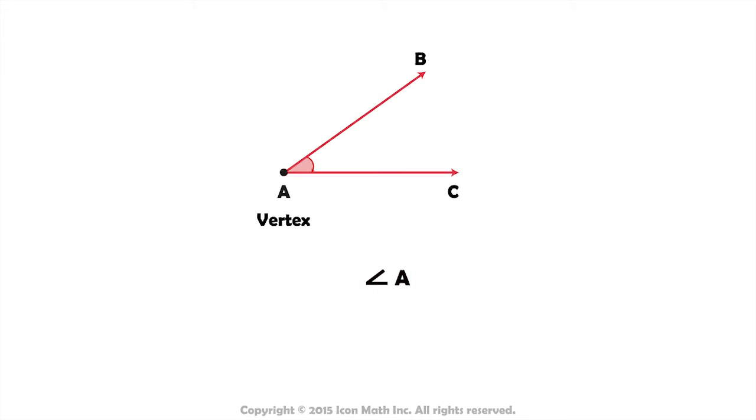Another way to name angles is by using three letters. So we can call our angle BAC or CAB. This is the long form. Note that in the long form of naming an angle, the vertex should be in the middle of the name.